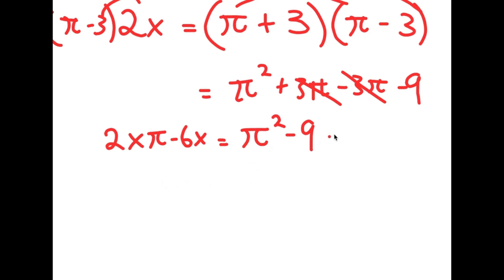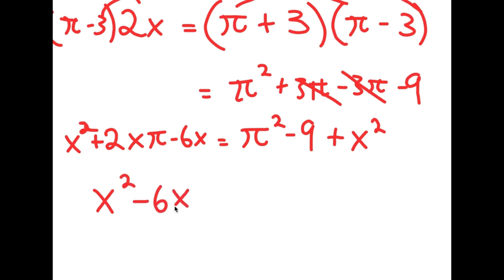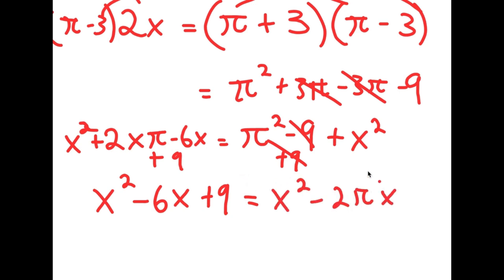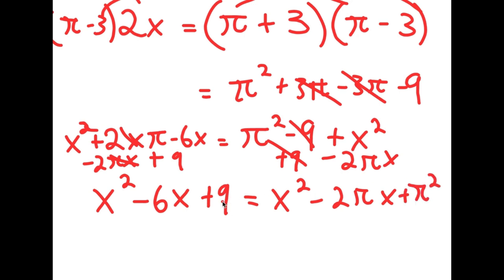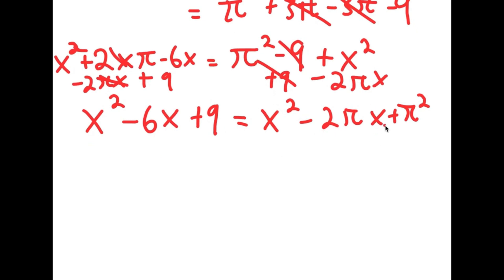From here, I'm going to add x squared on both sides. So I have x squared plus 2x·pi minus 6x is equal to pi squared minus 9 plus x squared. Let me just reorder this — I'm going to write this as x squared minus 6x plus 9. So I'm going to add 9 on both sides, which is equal to x squared minus 2·pi·x. So I'm going to subtract 2·pi·x on both sides, plus pi squared.